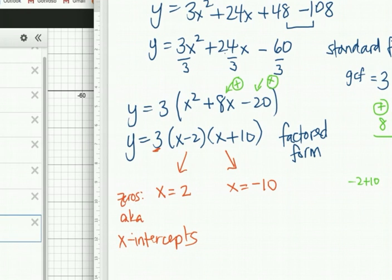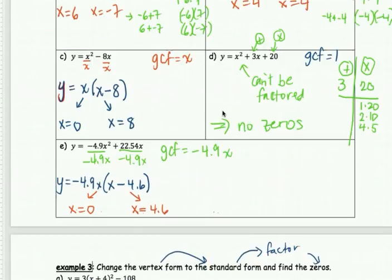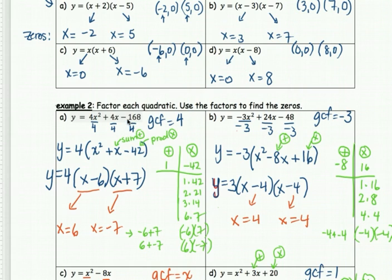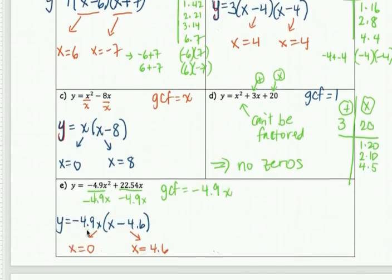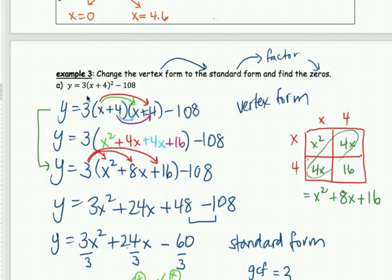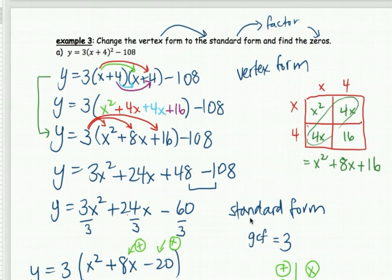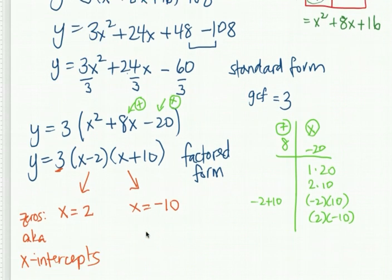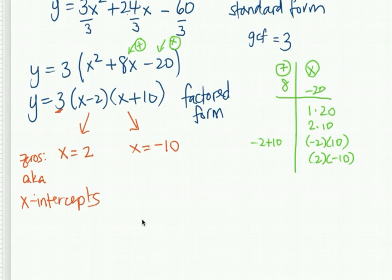That's all you're doing today — finding the zeros. When it's already in factored form, pop them out. Watch out for the ones where it's just x — that becomes 0. When it's in standard form, it takes more work: find your greatest common factor, do the adding-multiplying table, find your factors, and pop out the zeros. The longest case is vertex form: go from vertex to standard form by multiplying out, then go from standard form to factored form using the adding-multiplying table, and then get your zeros. Hopefully that was enough examples — email me if not, and I can meet with you. Practice a few and then try the checkpoint.